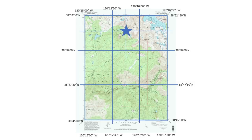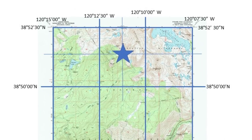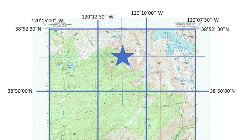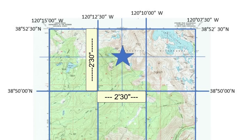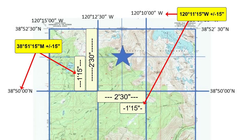We could estimate the latitude and longitude of any location on this map by estimating where it sits between these grid lines and adding appropriate error. For example, this star is in the middle of these grid lines. The grid lines are separated by 2 and a half minutes, half of which is 1 minute and 15 seconds. So if we add 1 minute and 15 seconds to the longitude and to the latitude, we find the coordinates of that point. I'll also add 15 seconds of error to handle the fact that it's an estimation.